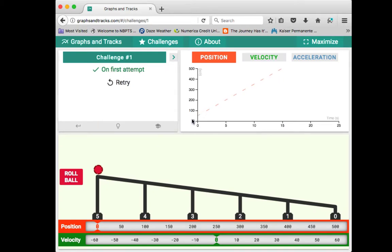The first challenge shows a straight line on the position graph. We want to arrange the track and ball so that when we click roll ball, the graph will match this dotted line. This is what it's set up for. I'm just going to go ahead and roll it from here and see what happens.